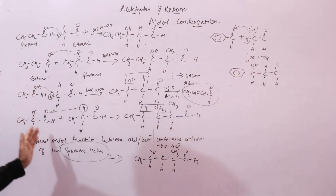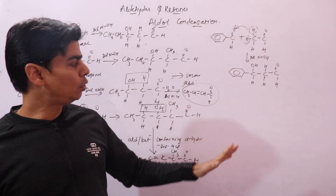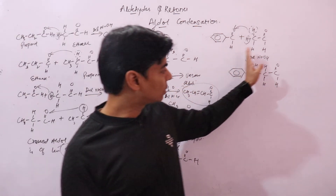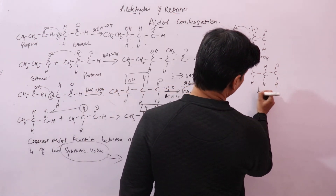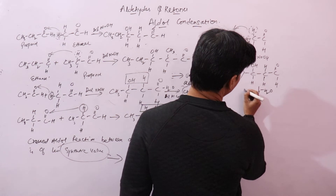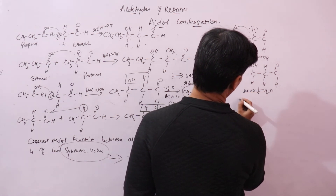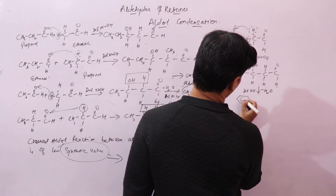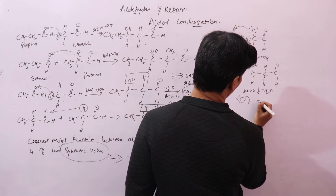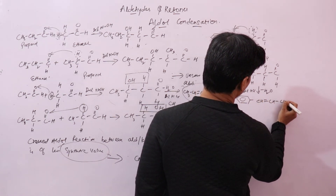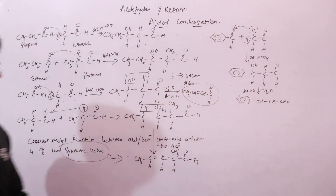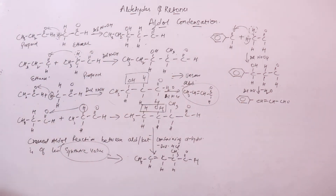Unlike the case with ethanol and propanol, here you won't get a mixture of products. This beta-hydroxy aldehyde undergoes dehydration in presence of dilute HCl to form a single unsaturated aldehyde product.